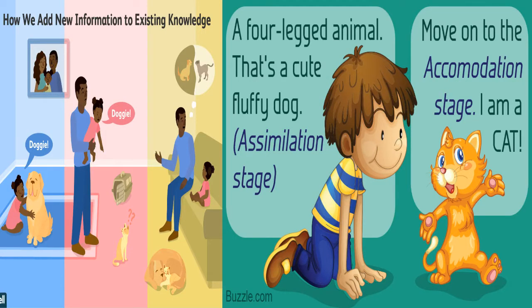Assimilation is using an existing schema to deal with a new object or situation. Accommodation happens when the existing schema does not work and needs to be changed to deal with the new object or situation.